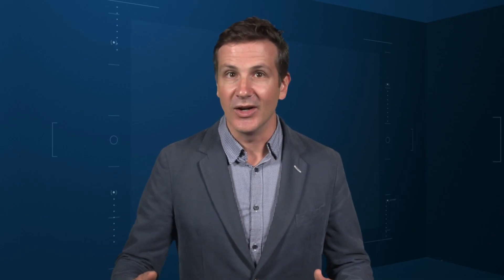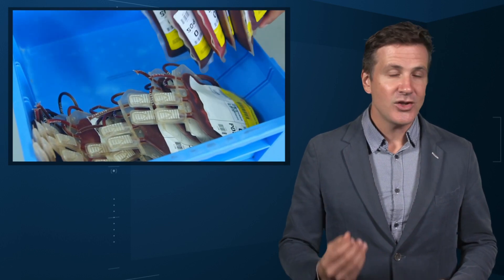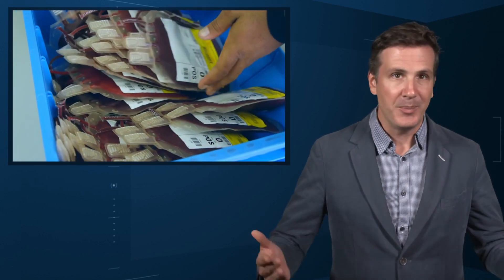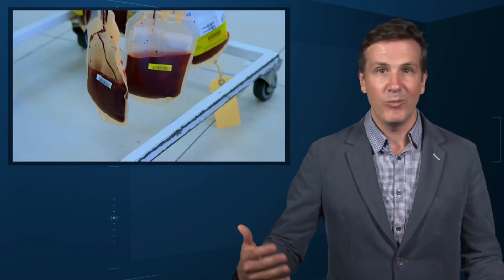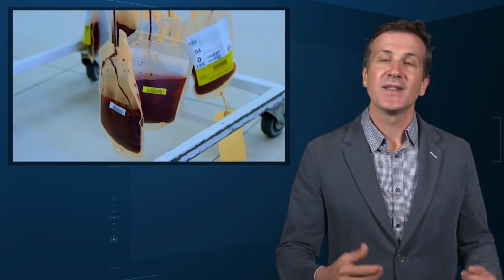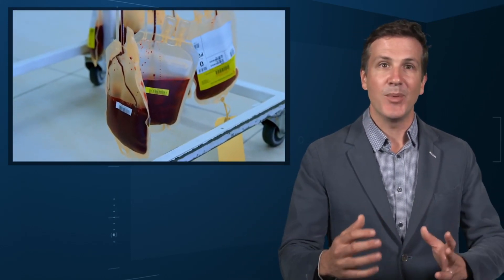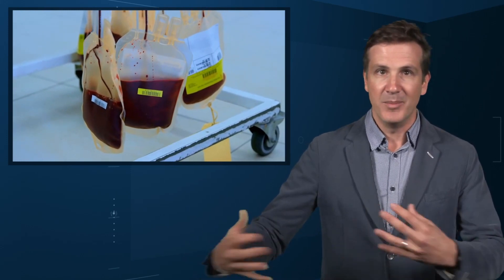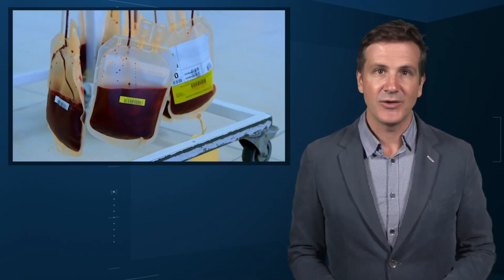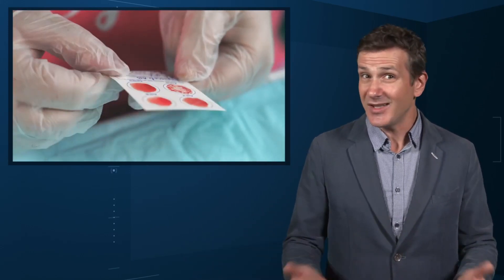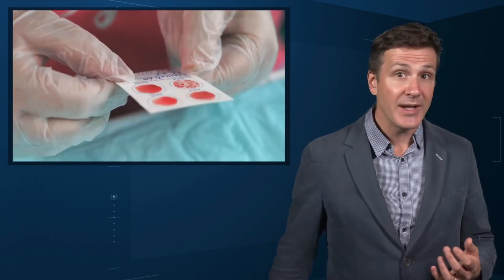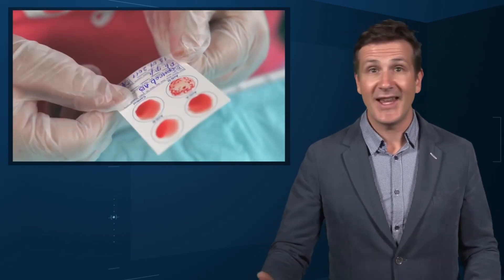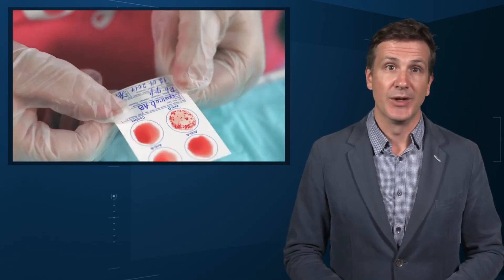Of course, there are some potential confounders to consider here. Whose blood you get is not totally random. If, for example, people with type O blood are just more likely to have brain bleeds, then you could get results like this, since type O tends to donate to type O and both groups would have higher risk. But the authors adjusted for blood type. They also adjusted for number of transfusions, calendar year, age, sex, and indication for transfusion.